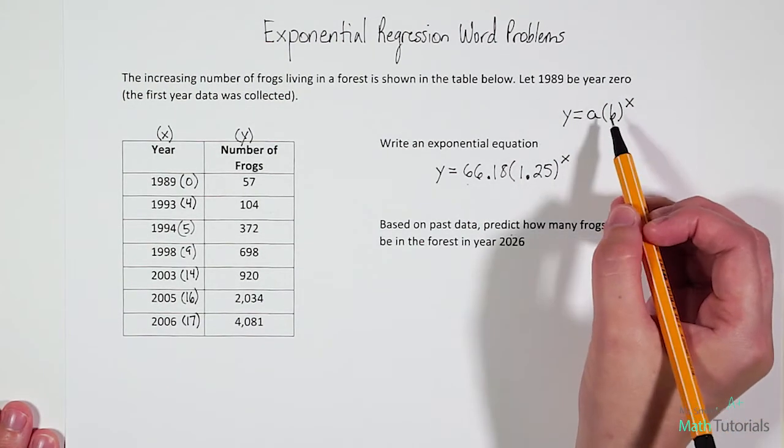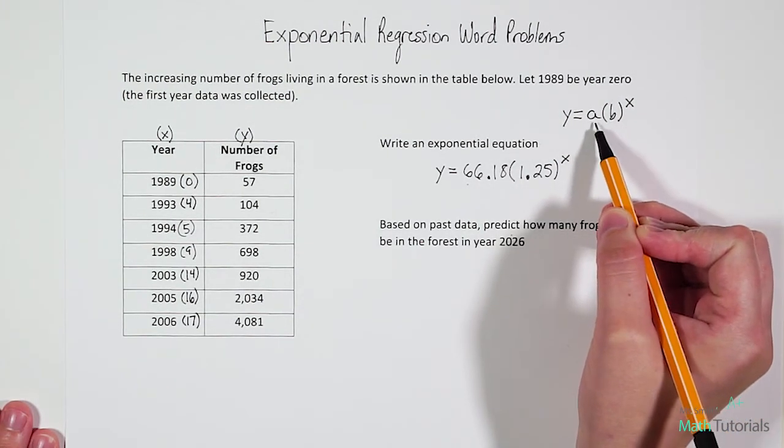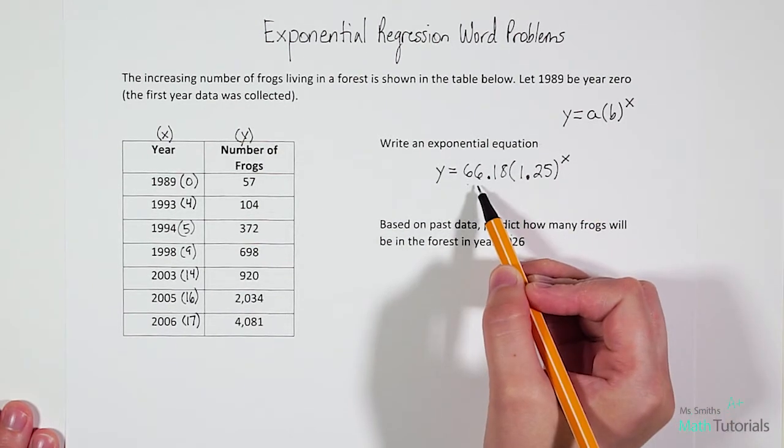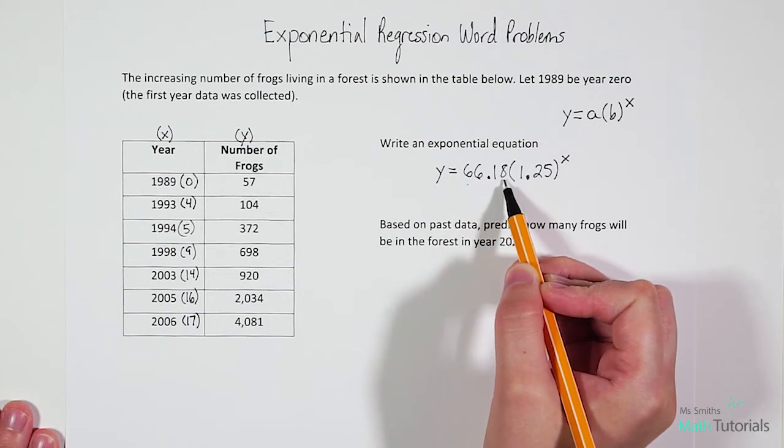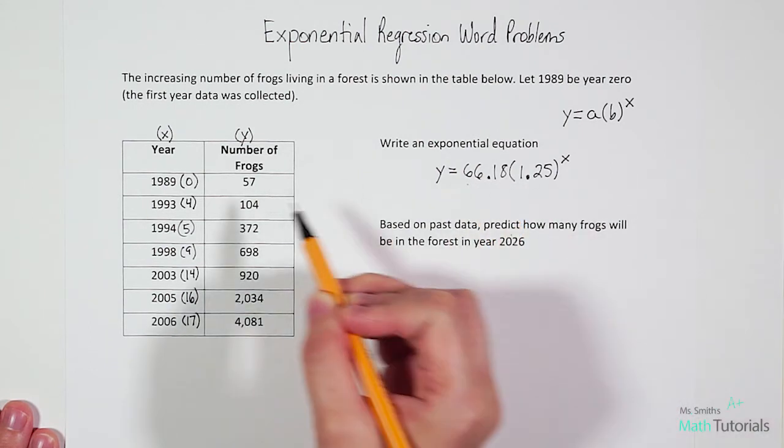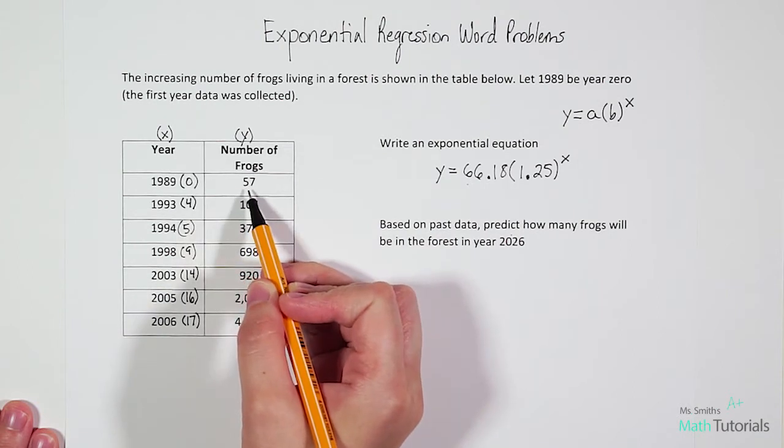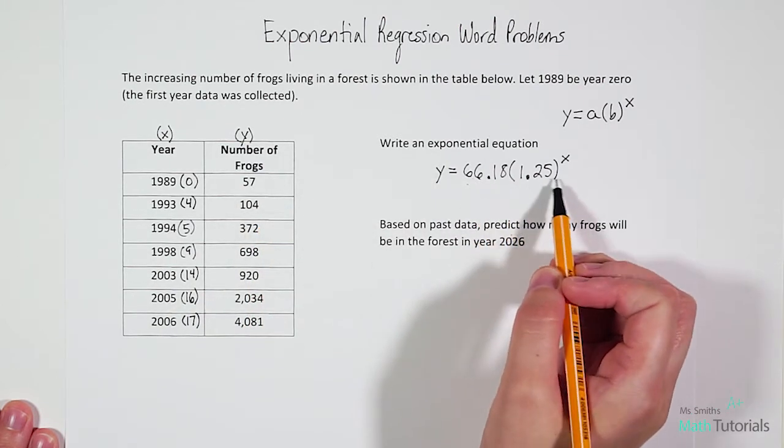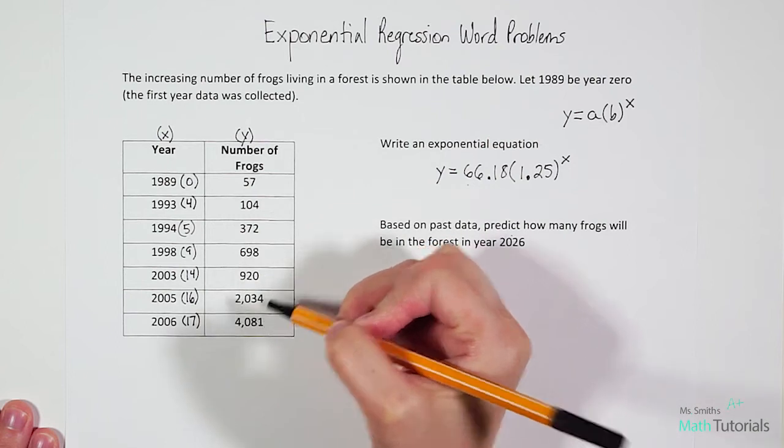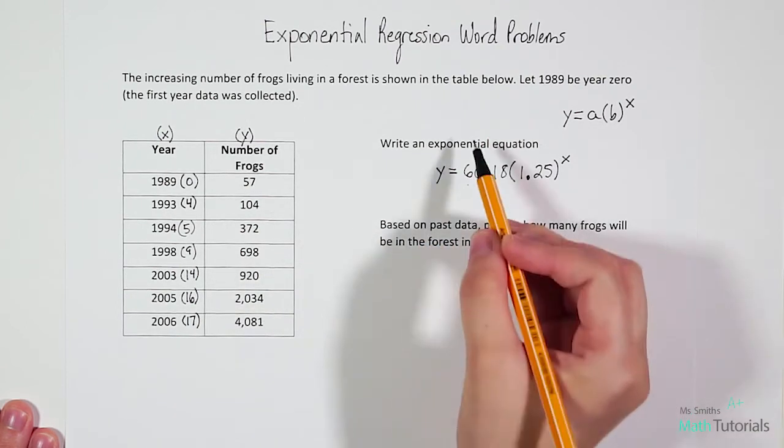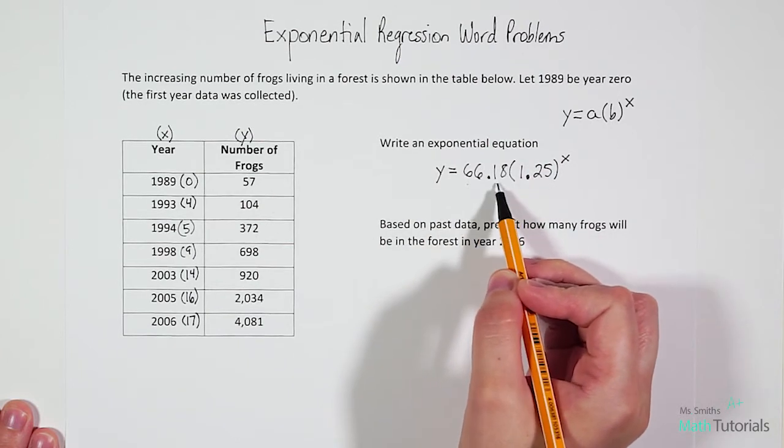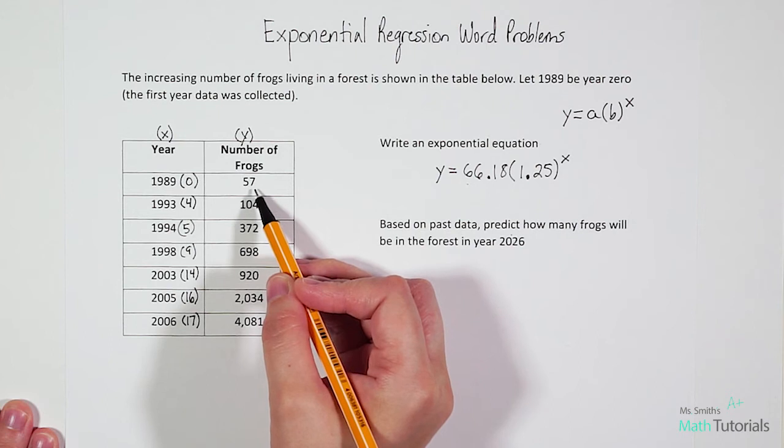You may have noticed that I mentioned that a is our starting point or our initial value. And the a for our exponential equation is 66.18, which is different from the actual starting value of our data, right? Our starting value of our data was 57. And that's totally fine. This equation is aligning all of these data points as best it can into an exponential form, so it makes sense that the starting value may not match our actual starting value.